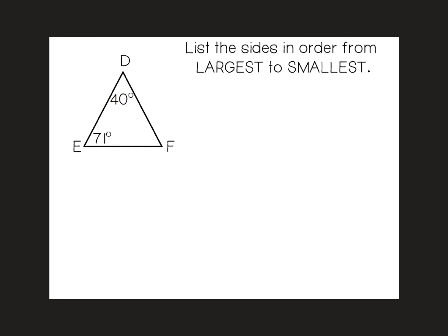In this example, again, we're listing sides in order from largest to smallest, but we're missing an angle. So just as a reminder, triangle angle sum theorem states that all angles of a triangle have to add up to be 180 degrees. So if we add these two angles together, we get 111. 180 minus 111 is 69 degrees.